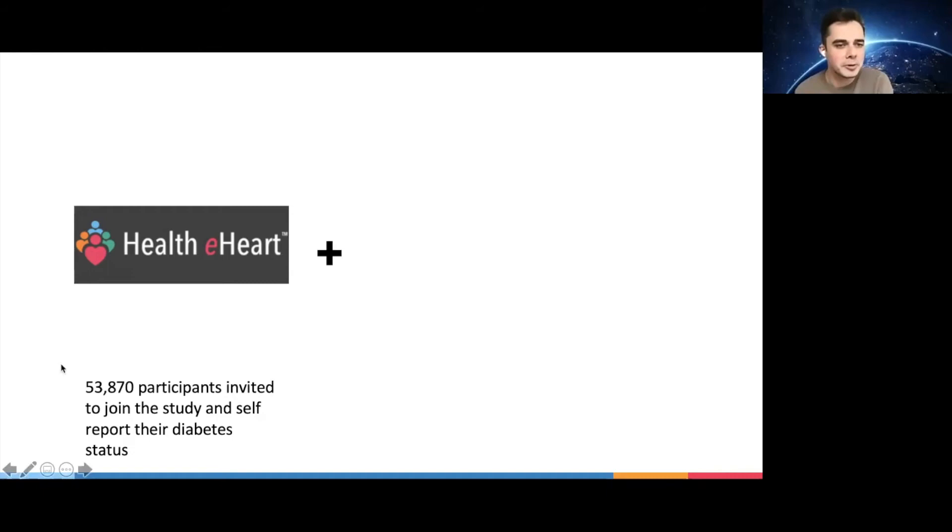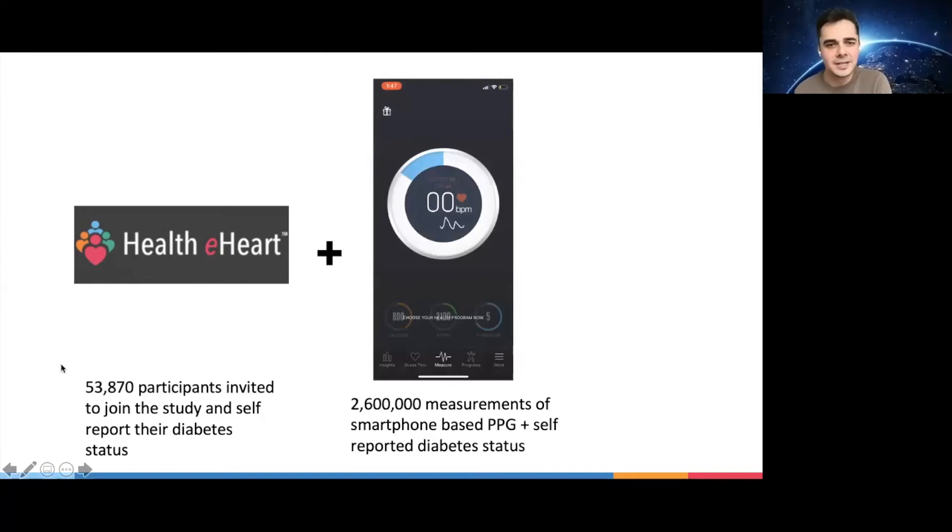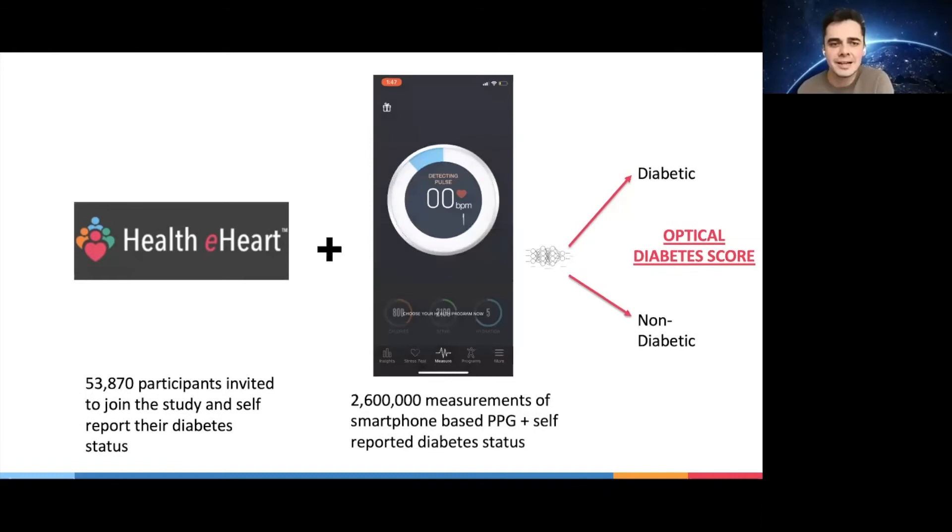To do so, we leverage Healthy Heart, which is an observational international digital study where participants can join in and consent and donate their data such as smartphone or wearable-derived data and also fill patient reported outcomes. We had almost 54,000 participants that were invited and joined the study. Some had diabetes, some did not have diabetes, some developed diabetes throughout the study period. They recorded a total of 2.6 million measurements of smartphone-based photoplethysmography by downloading the app and taking a 30-second recording, which you see here. We then built an AI algorithm to detect diabetes status and differentiate it from the non-diabetic status. The model outputs a score between 0 and 1. The closer you are to 1, the more likely you are to have diabetes. The closer you are to 0, the most likely you are to be non-diabetic.